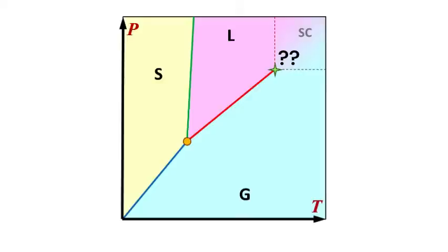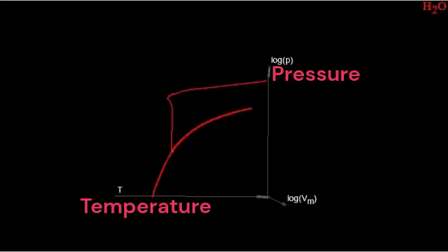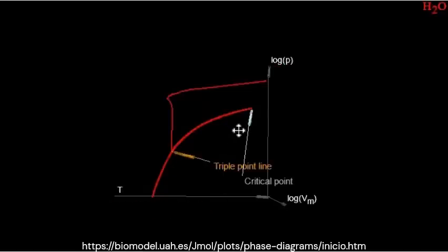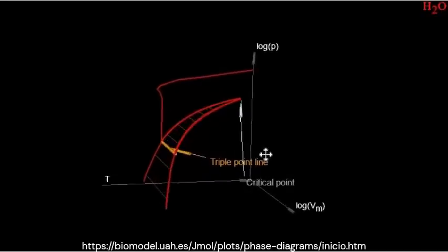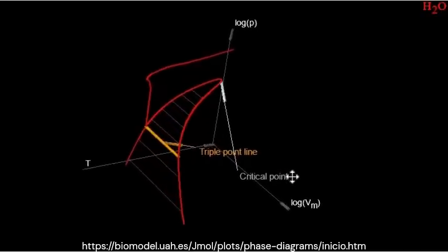It's almost like trying to draw a square with only three lines. Well, the answer is, the transition line doesn't actually end at the critical point. You see, the phase diagram we're so used to seeing is the pressure-temperature diagram, or PT diagram, which is only a 2D projection of the full 3D diagram, the PVT diagram.